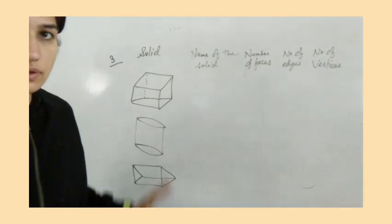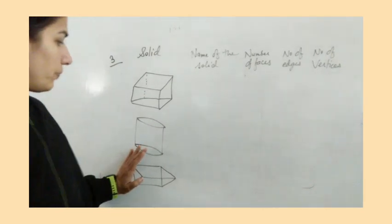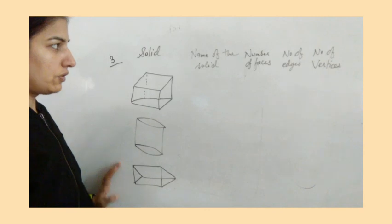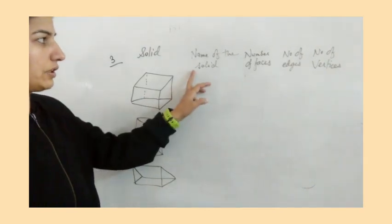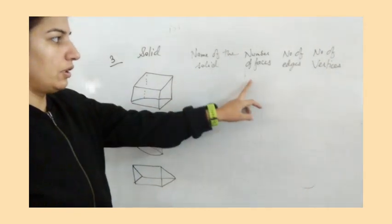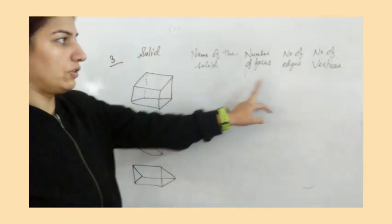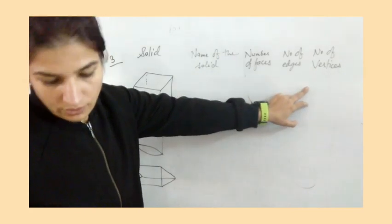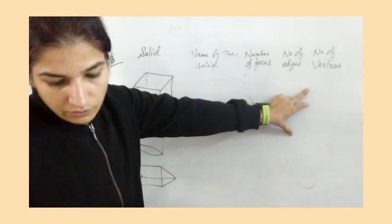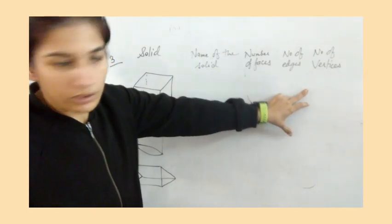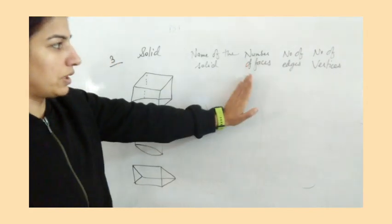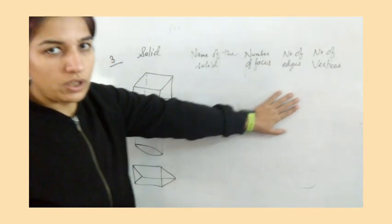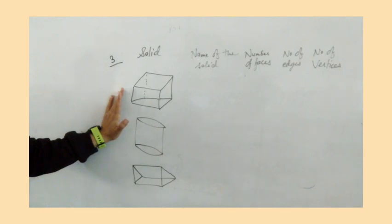Dear students, question number three. We have three figures and we have to tell the name of each solid, the number of faces, number of edges, and number of vertices. In the previous class you already learned about what are the faces, what are the edges, and what are the vertices.